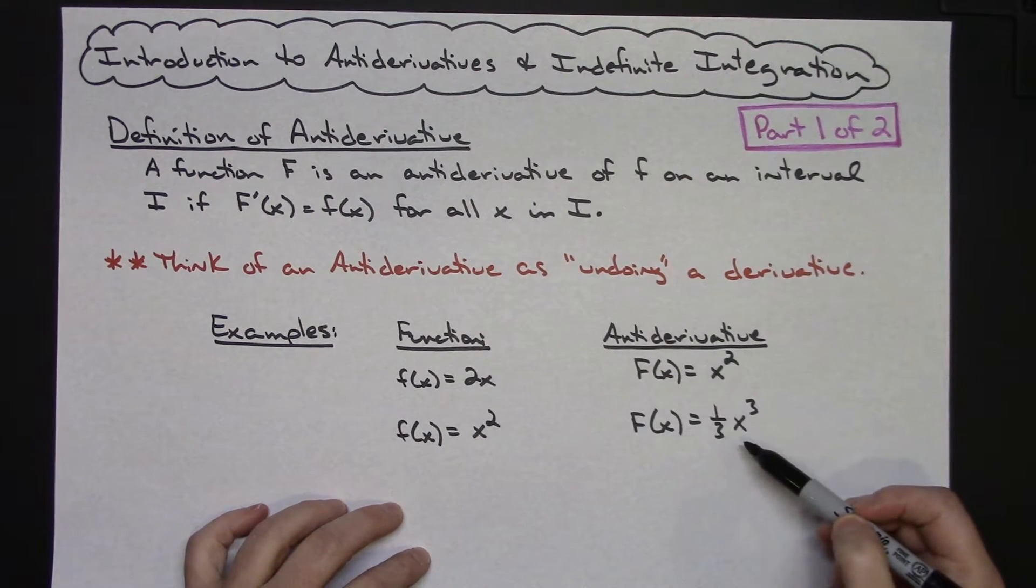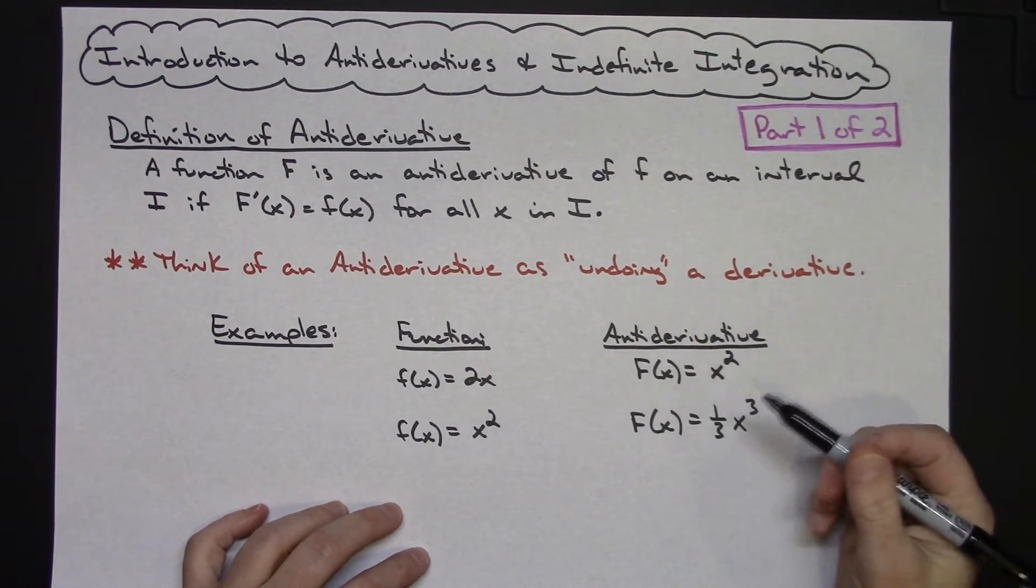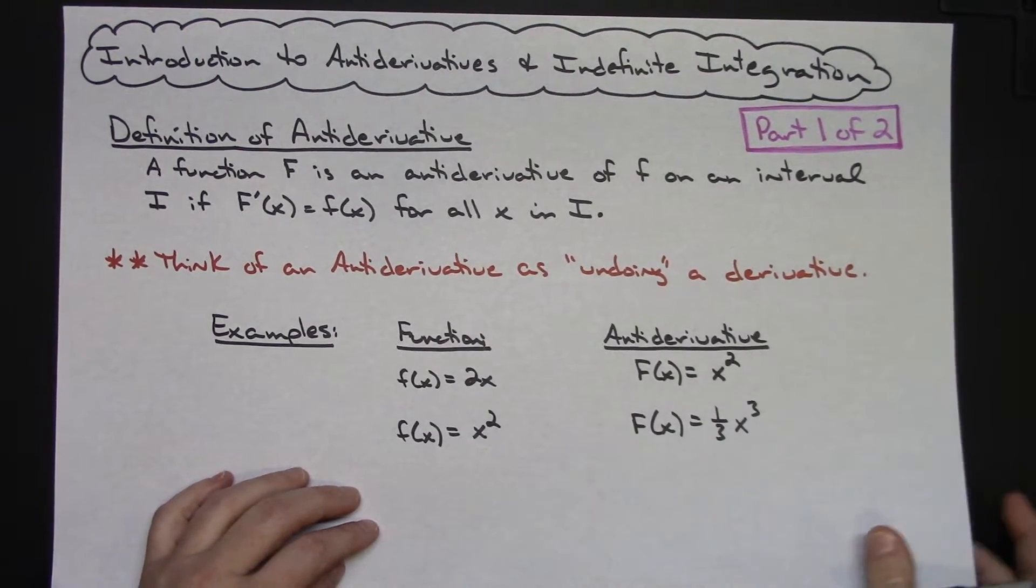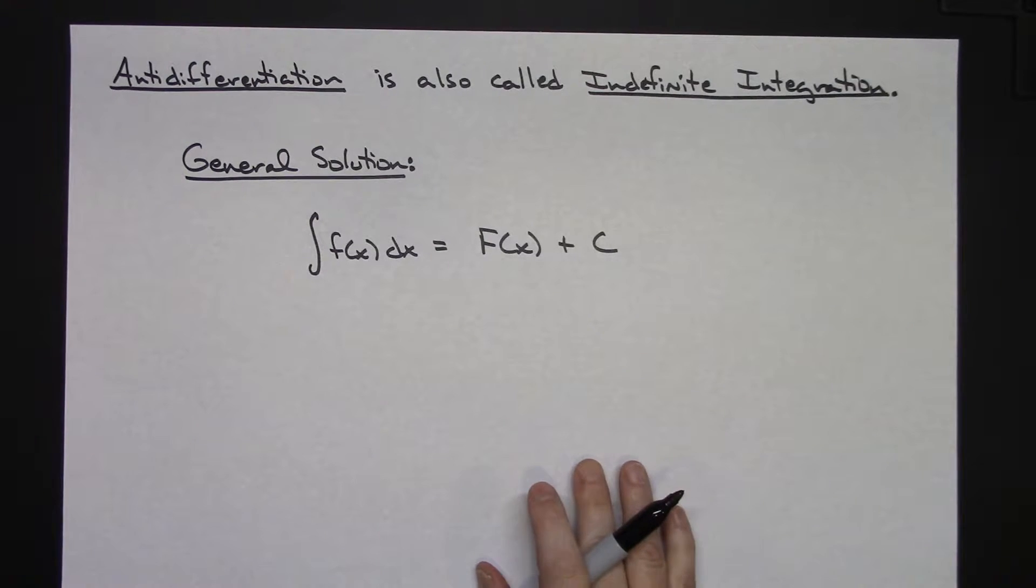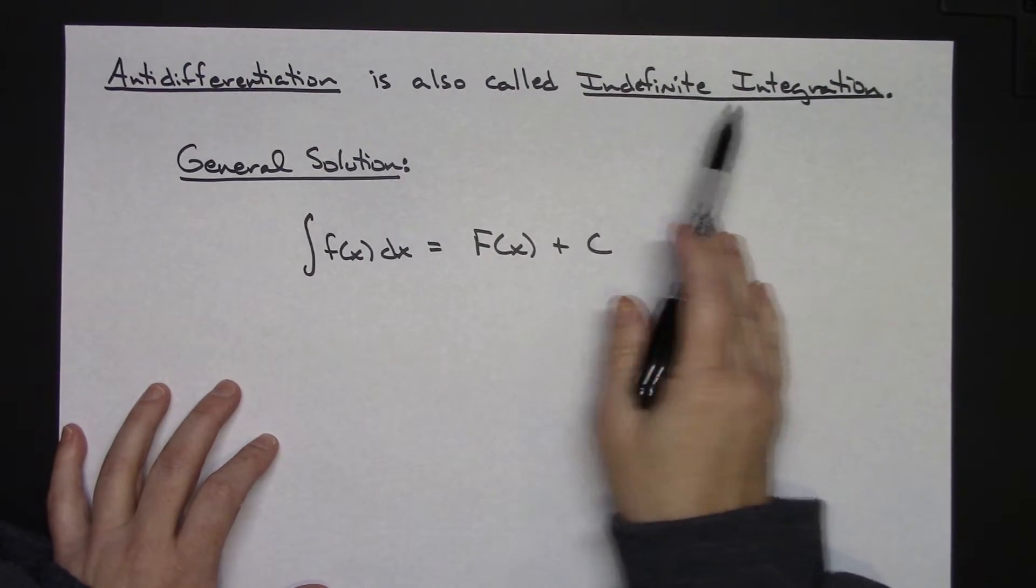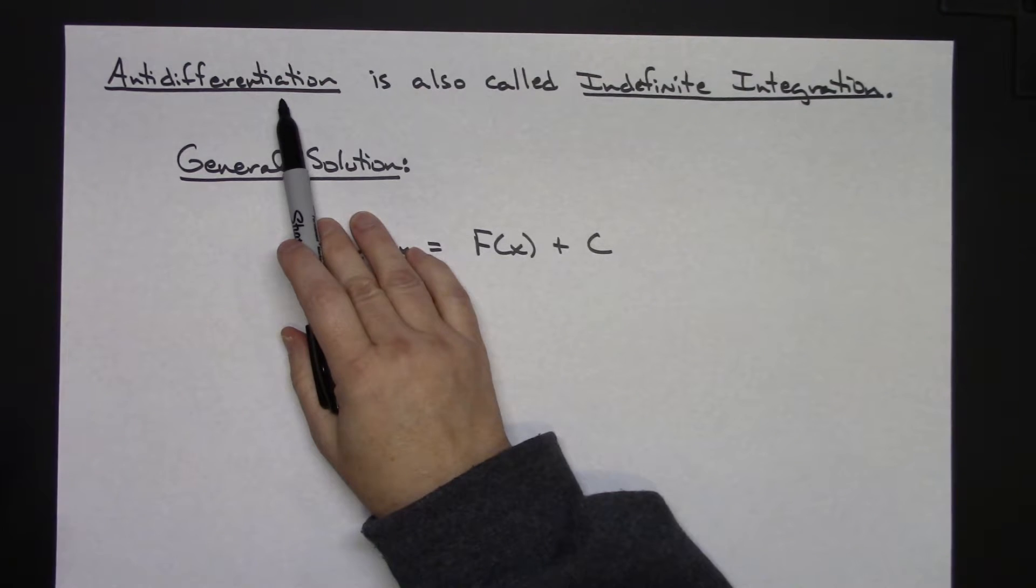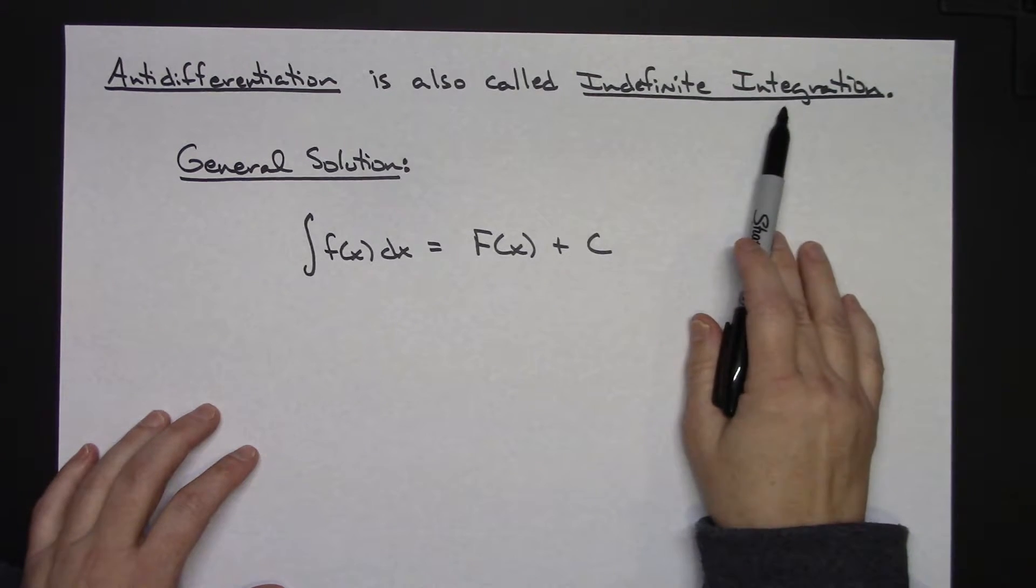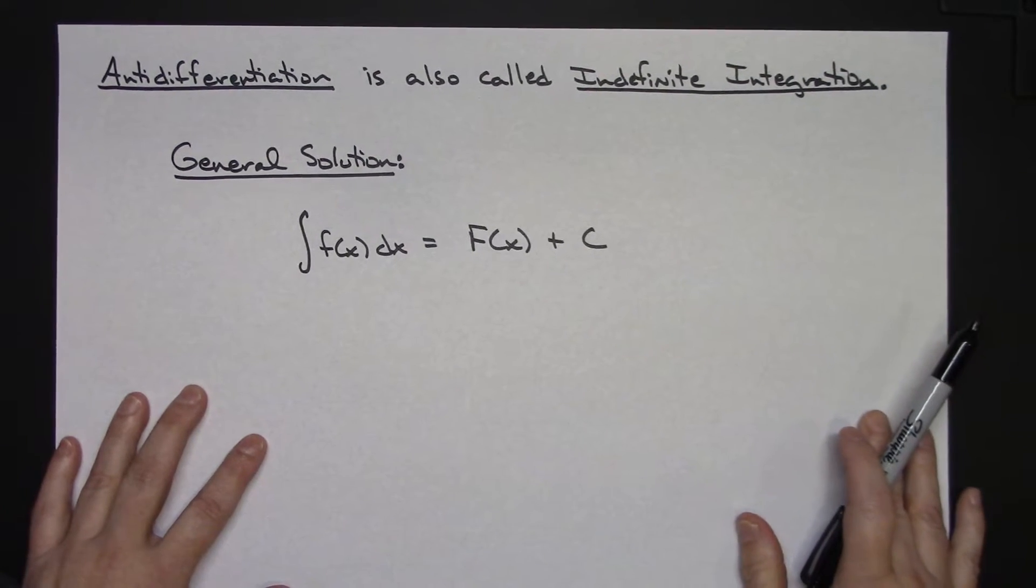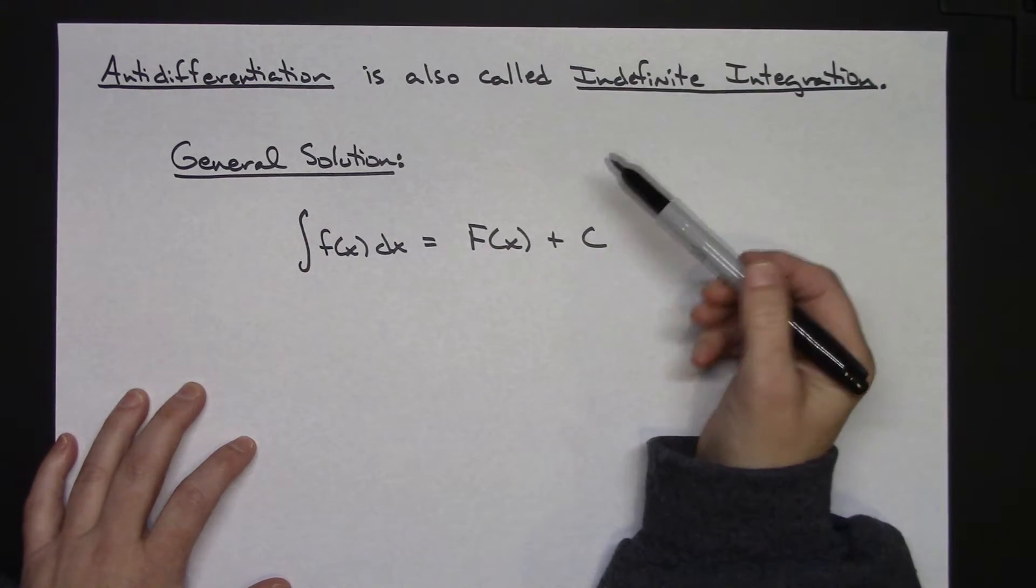These are really simple functions, these are really simple antiderivatives. All of the functions that we deal with are not going to be that simple. So we are going to have to come up with a general solution. So let's take a look at the general solution and then get some more definitions in here. So this is where I want to connect and maybe start calling it an indefinite integration here.